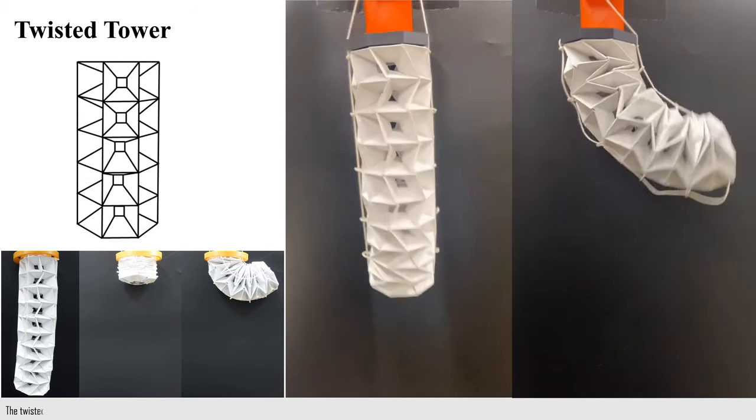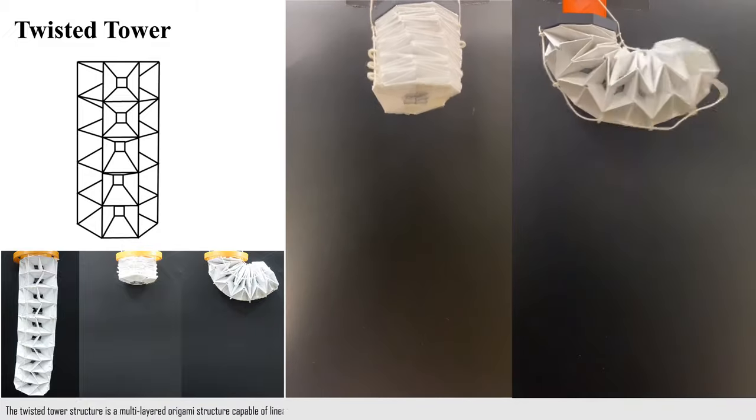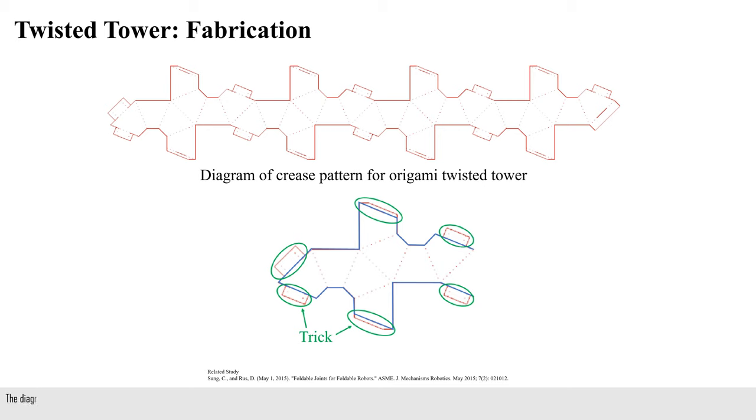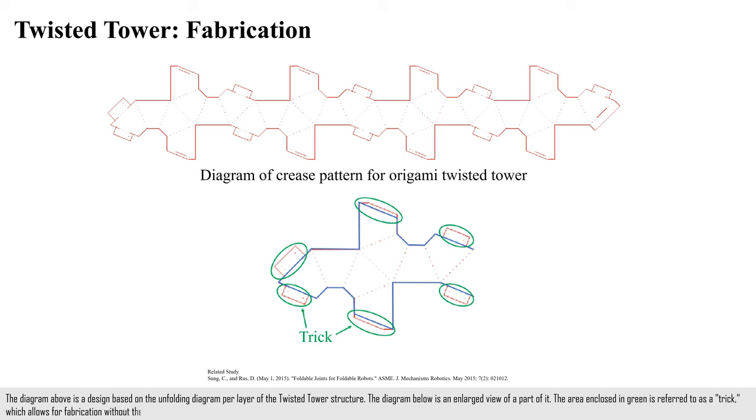The twisted tower structure is a multi-layered origami structure capable of linear extension and bending with twisting. The diagram above is a design based on the unfolding diagram per layer of the twisted tower structure. The diagram below is an enlarged view of a part of it. The area enclosed in green is referred to as a trick, which allows for fabrication without the use of tape.